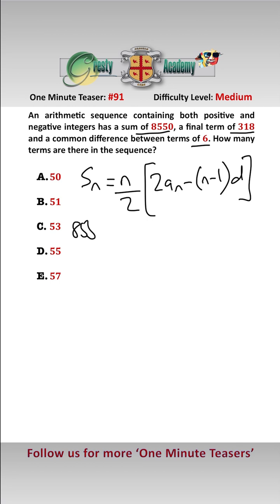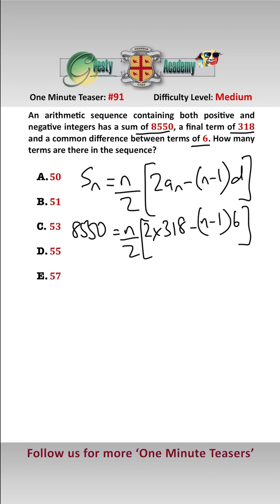Plugging in our values, we get 8550 equals n over 2 times (2 times 318 minus (n minus 1) times 6). Cleaning this up, we get 17100 equals 636n minus 6n squared plus 6n.